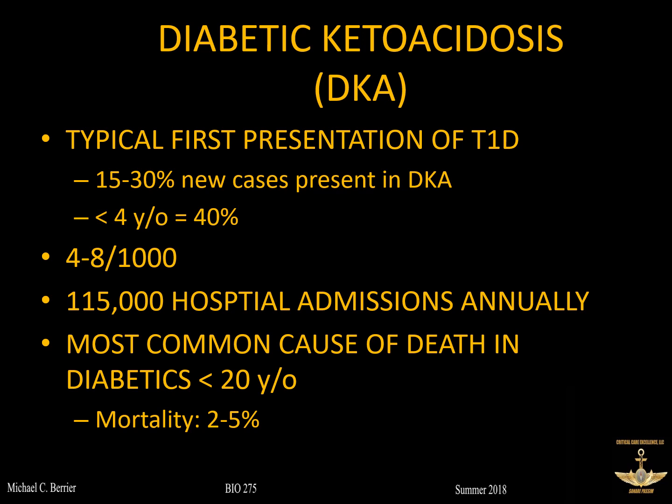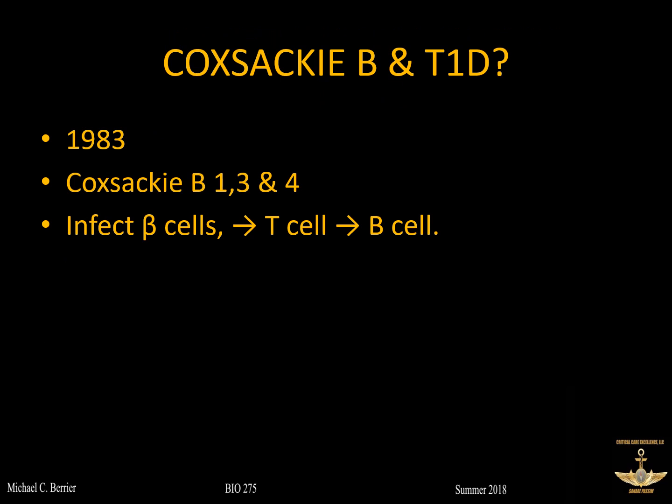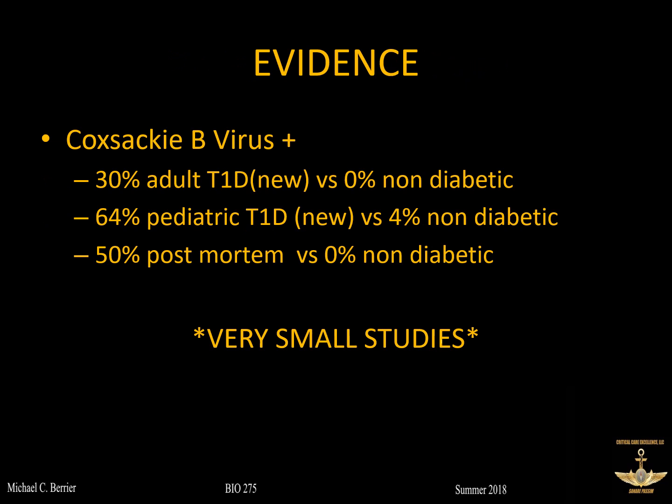What's the virus got to do with this? Coxsackie B was isolated as a possible trigger for new-onset diabetes back in 1983. Specifically, strains B1, B3, and B4 are associated with diabetes, while B2, B5, and B6 are typically linked to other things like myocarditis. The thinking is that Coxsackie B infection of the beta cells triggers T cells to activate B cell macrophages, which then destroy the insulogenic cells trying to kill the virus — and that's what leads to type 1 diabetes.